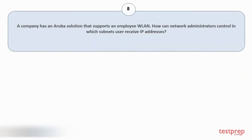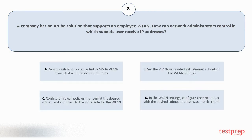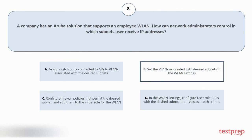Question number 8: A company has an Aruba solution that supports an employee VLAN. How can network administrators control in which subnets users receive IP addresses? Option A: Assign switch ports connected to APs to VLANs associated with the desired subnets. Option B: Set the VLANs associated with desired subnets in the VLAN settings. Option C: Configure firewall policies that permit the desired subnet and add them to the initial role for the VLAN. Option D: In the VLAN settings, configure user role rules with the desired subnet addresses as match criteria. The correct answer is option B.